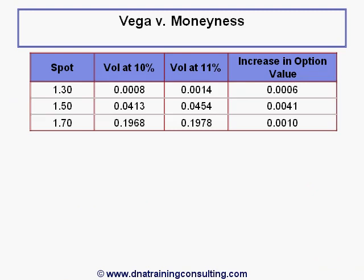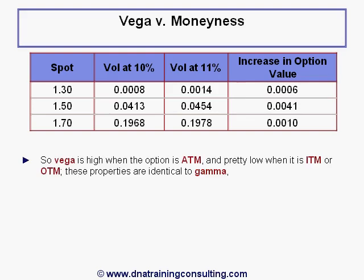This table shows the price of our option under its three stages of moneyness — out of the money (top row), at the money (middle row), and in the money (bottom row) — at vol levels of 10% and 11%, helping us visualize how much Vega each stage has. We note that Vega appears very high when the option is at the money, and pretty low when it is in the money or out of the money, as clearly visible in the last column.